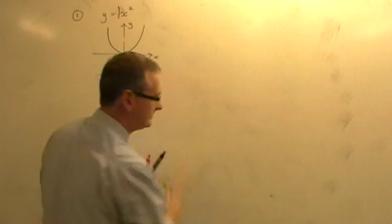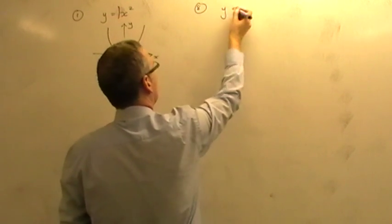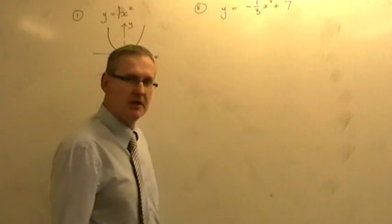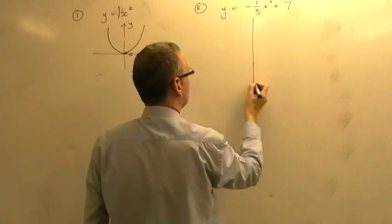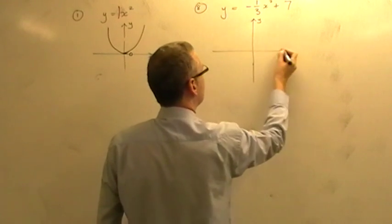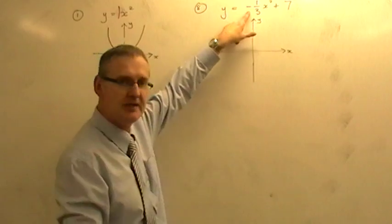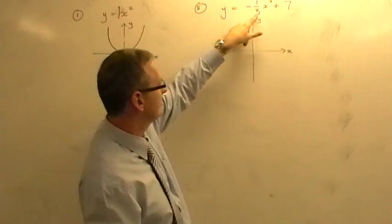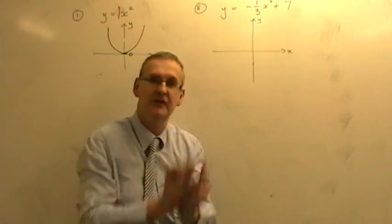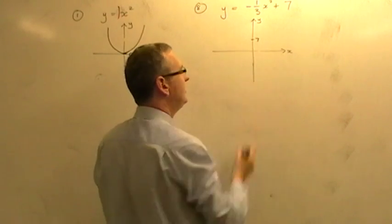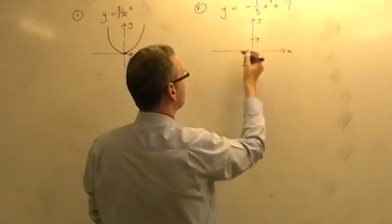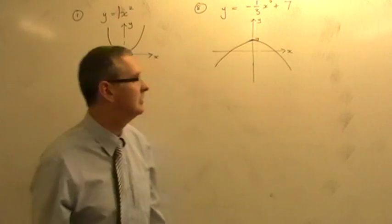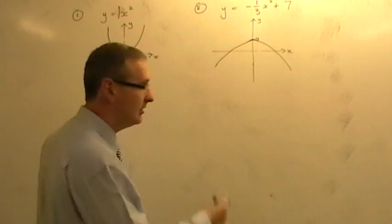Number eight: y equals minus one-third x squared plus 7. It's a quadratic because of the x squared. The minus in front makes it an n-shape. The one-third means it's shallow — shallower than one x squared. The plus 7 on the end controls vertical motion, moving things up 7. So you draw a very shallow n-shape with the top of the n at plus 7 on the y-axis. It's only a sketch — it doesn't have to be accurate.